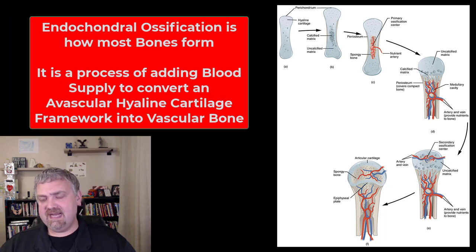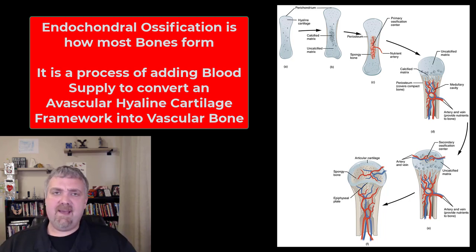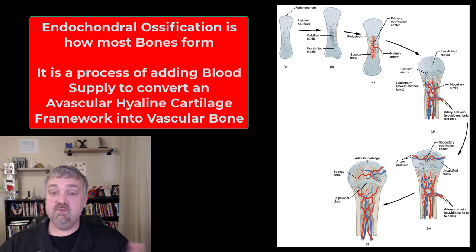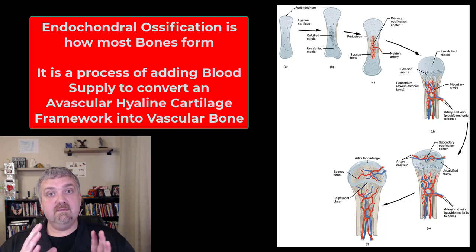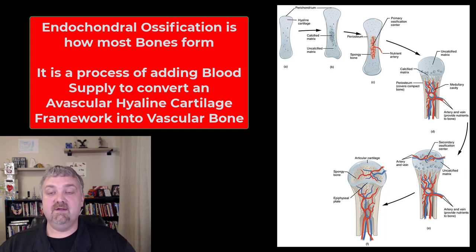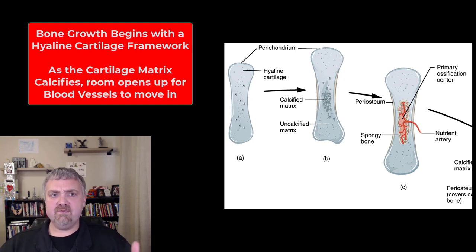There are two main forms of ossification or bone formation: intramembranous ossification, which impacts a few bones, but we're going to focus on endochondral ossification here. I think people overthink this and make it more confusing than it needs to be. Our bones in our mother's wombs started as a hyaline cartilage framework. Cartilage is avascular, bone is vascular. So you start with a cartilage framework, blood vessels show up, and cartilage is slowly converted into bone tissue.